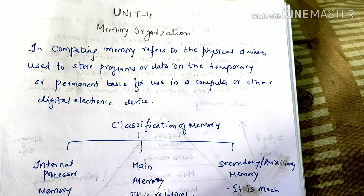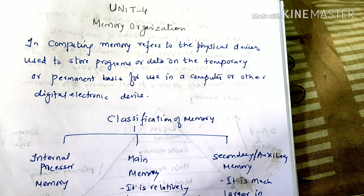We are going to start Unit 4, Computer Organization and Architecture. This is the first topic: memory organization. In computing, memory refers to the physical devices used to store programs or data on a temporary or permanent basis for use in a computer or other digital electronic device. We can store program and data temporarily — stored for some time and deleted when required — or permanently. Memory is used in computers, mobile devices, and laptops.